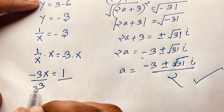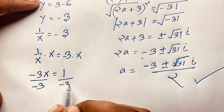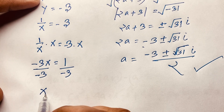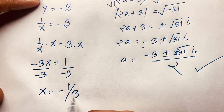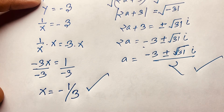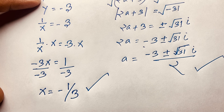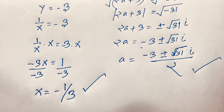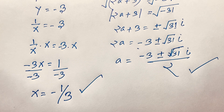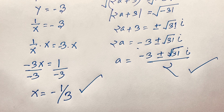Dividing both sides by -3, we find x = -1/3. This is our final real solution to this interesting math question. Thank you all — if you enjoy this video, please subscribe to my channel for more interesting videos. Goodbye, take care.